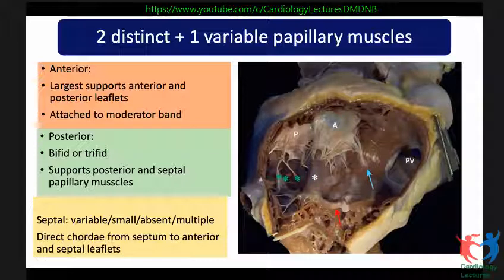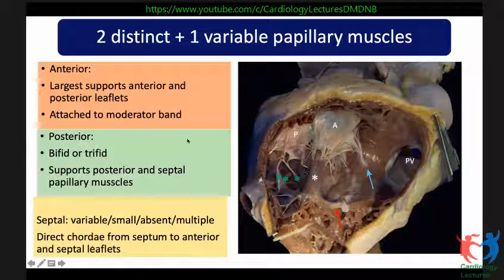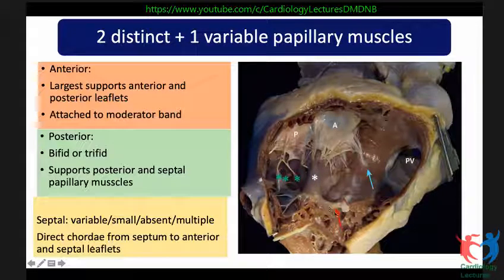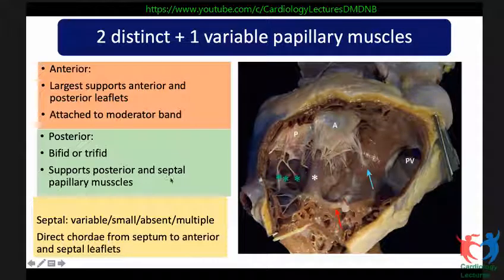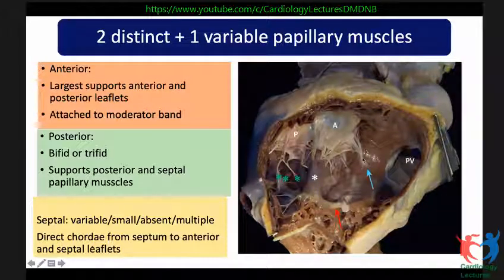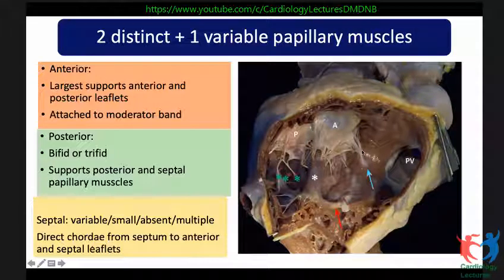Regarding the papillary muscles: the anterior papillary muscle is the largest — a thick papillary muscle that supports both the anterior and posterior leaflets and is attached to the moderator band. The posterior papillary muscle can be bifid or even trifid with three heads, and it supports the posterior and septal leaflets. For the septal leaflet, there is no major papillary muscle; the chordae arise directly from the outlet septum, and a majority are attached to the septal leaflet, with some also attached to the anterior leaflet.